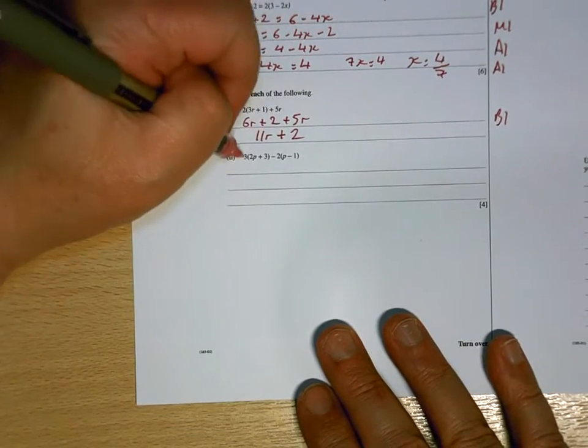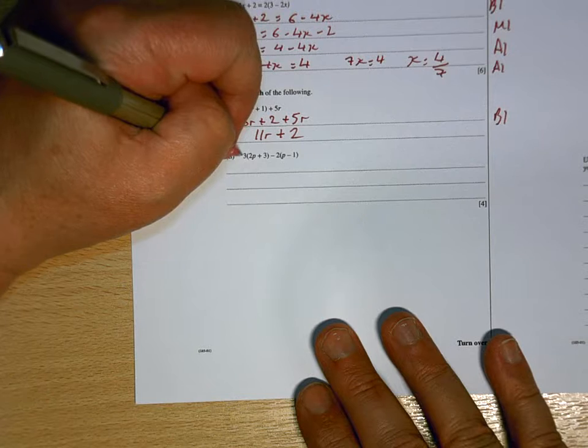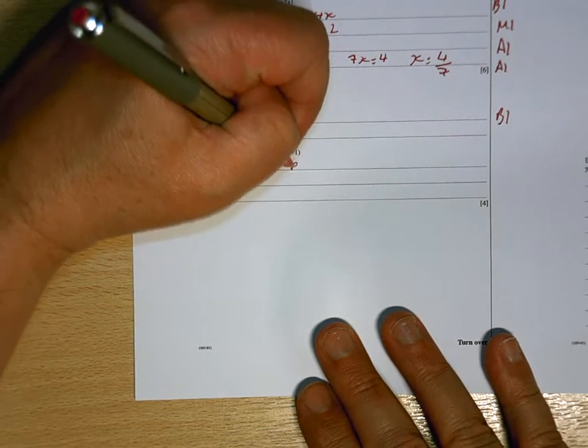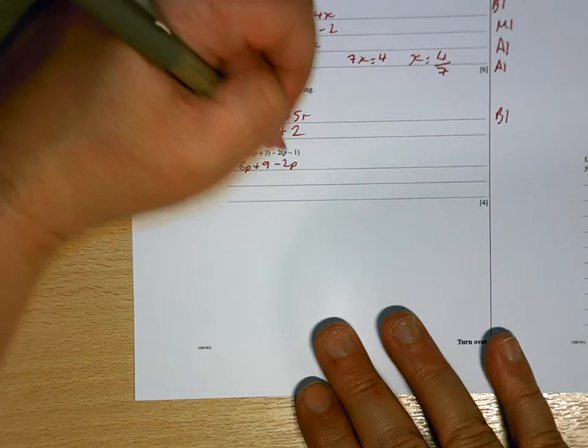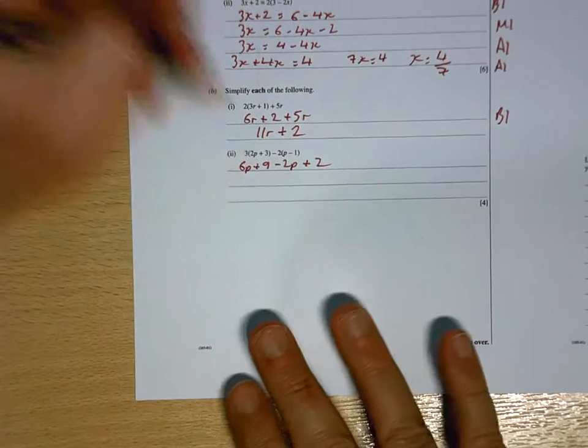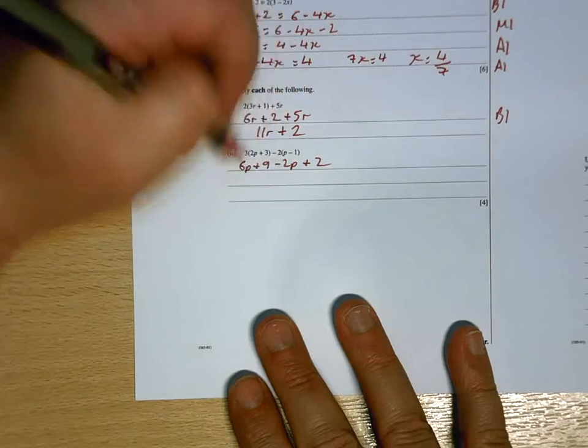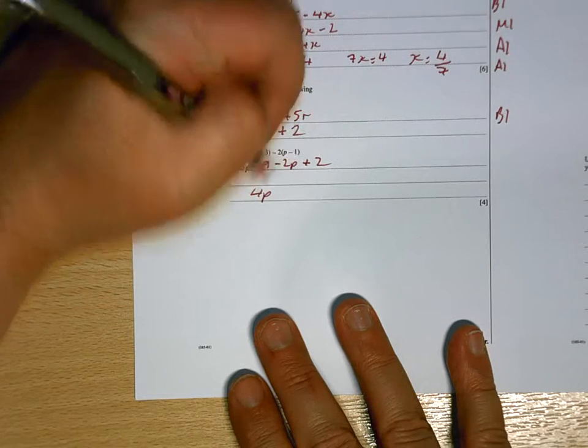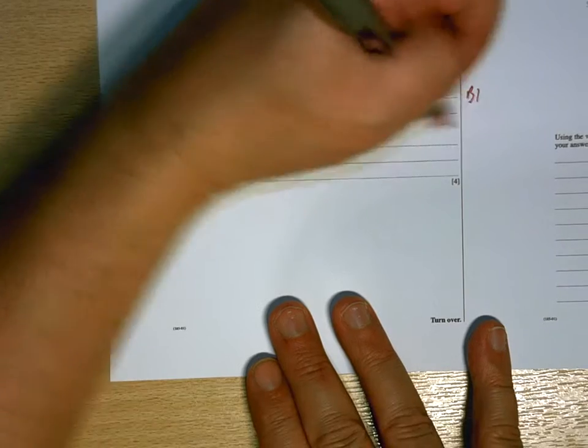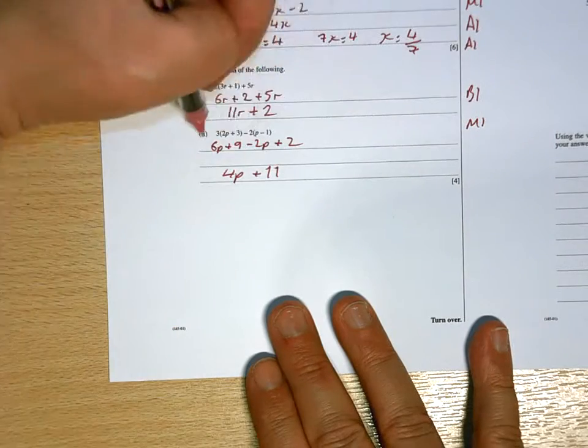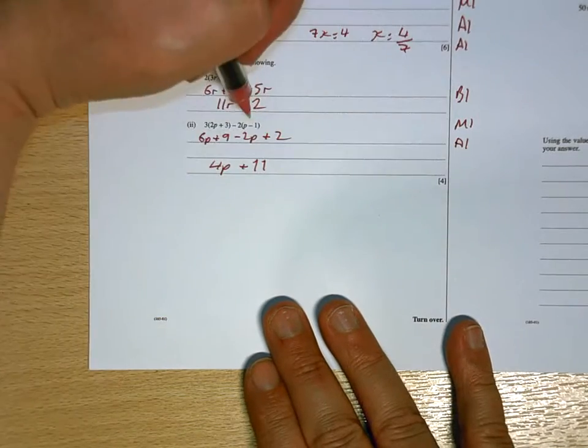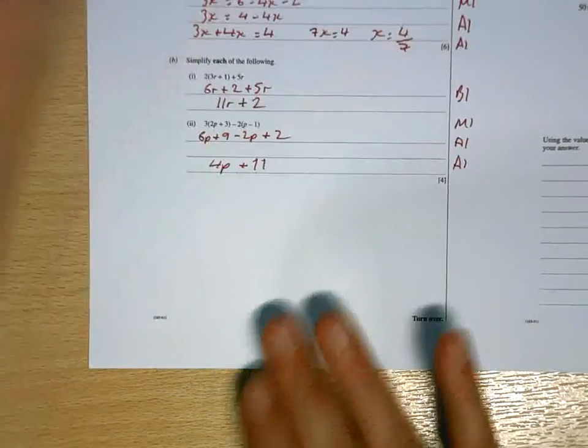And then, for this one, there's 2 lots of brackets. So, you're going to have 6P plus 9 minus 2P. And here, you've got minus times a minus makes a plus. 2 times 1 is 2. Now, I've got 6P take away 2P is 4P. And I've got 9 add to 2 is 11. So, here, you're going to have 1 for expanding the brackets. You're going to have 1 for making that a plus. And then, you're going to have 1 for correct simplifying.